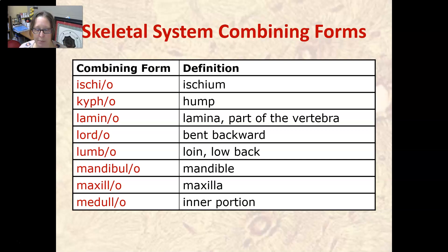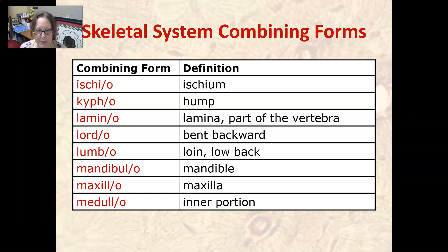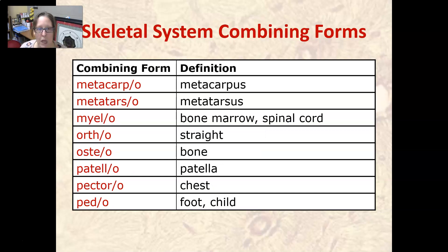Lordo means bent backward — I'll have pictures for that in the signs and symptoms section. Lumbo means loin or low back. Mandibulo means the mandible, and maxillo means the maxilla; those are the two bones around the mouth. Medullo means inner portion, which is where the bone marrow is.